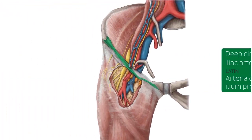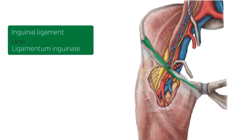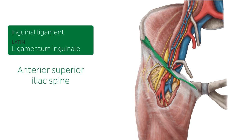The femoral artery is a continuation of the external iliac artery, but where does it begin? The inguinal ligament, highlighted here in green, marks this transition. The external iliac artery passes beneath the inguinal ligament about halfway between the anterior superior iliac spine — an important bony landmark of the hip bone — and the pubic symphysis, the joint that unites the two pubic bones of the hip.